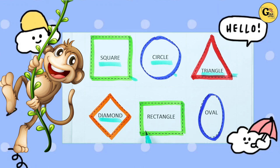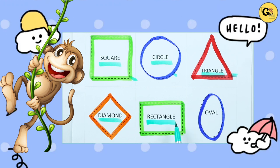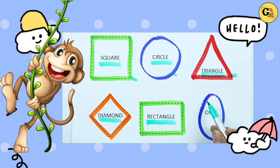Which shape is this? Rectangle. R-E-C-T-A-N-G-L-E. It's a rectangle with green color. Which shape is this?